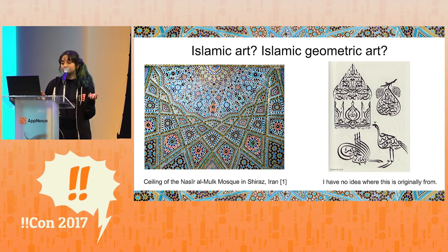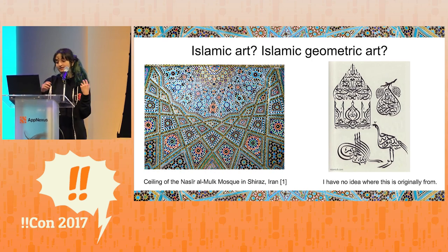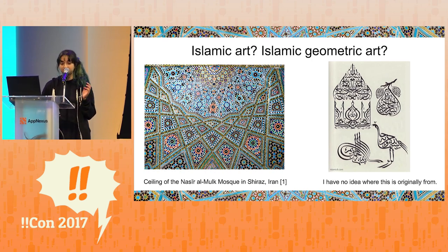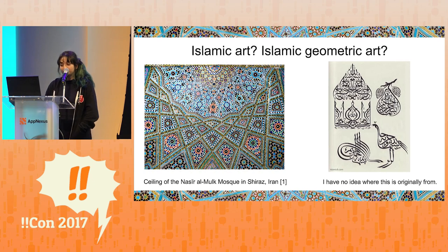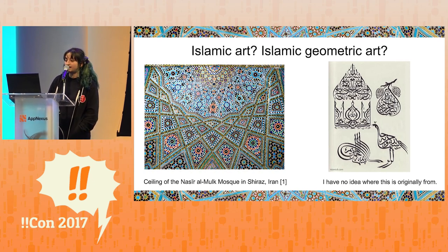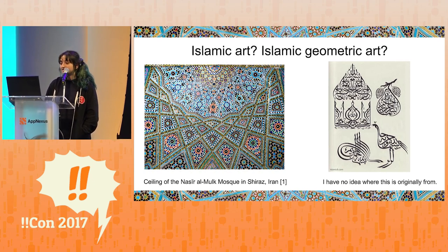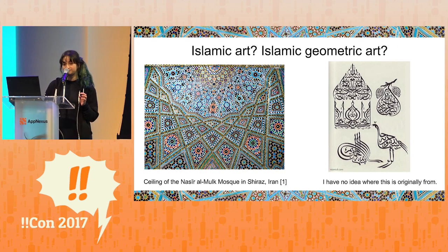That meant that art could no longer incorporate humans or animals, and in some extreme cases, even plants. You'd think that banning living beings from your visual art would result in very boring art, but the exact opposite happened. Islamic geometric art and Arabic calligraphy rapidly became very sophisticated forms of art.